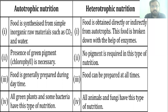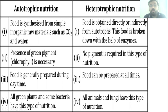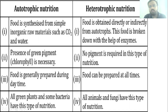The difference between autotrophic and heterotrophic nutrition: In autotrophic nutrition, food is synthesized from simple inorganic raw materials such as CO2 and water in the presence of sunlight. In heterotrophic nutrition, food is directly or indirectly obtained from autotrophs and broken down with the help of enzymes. In autotrophic nutrition, the green pigment chlorophyll is necessary, whereas in heterotrophic nutrition no pigment is required.